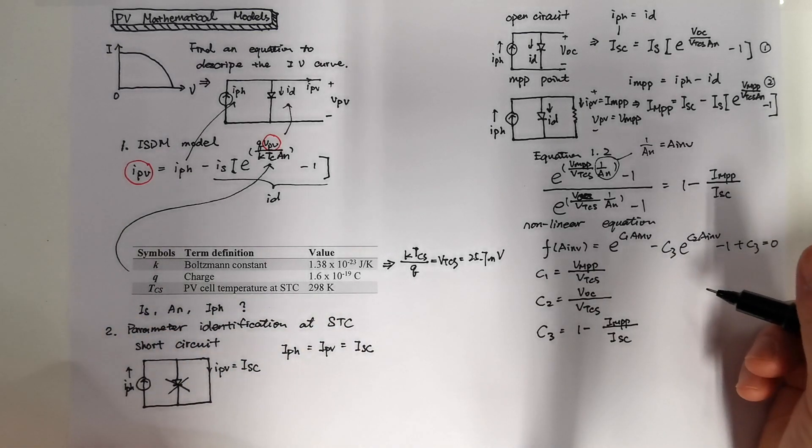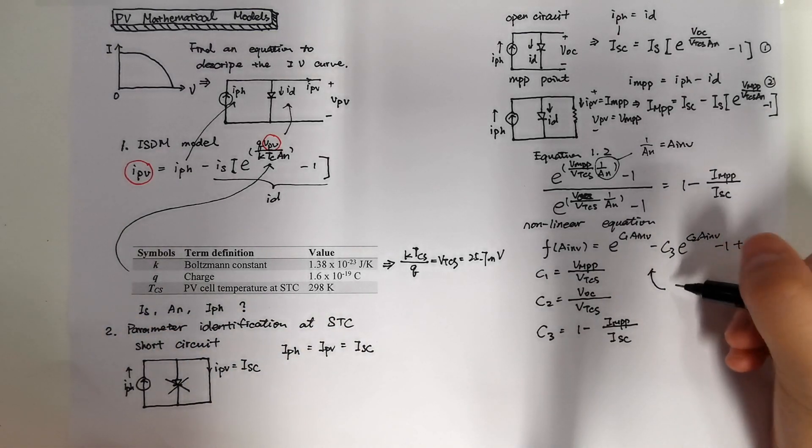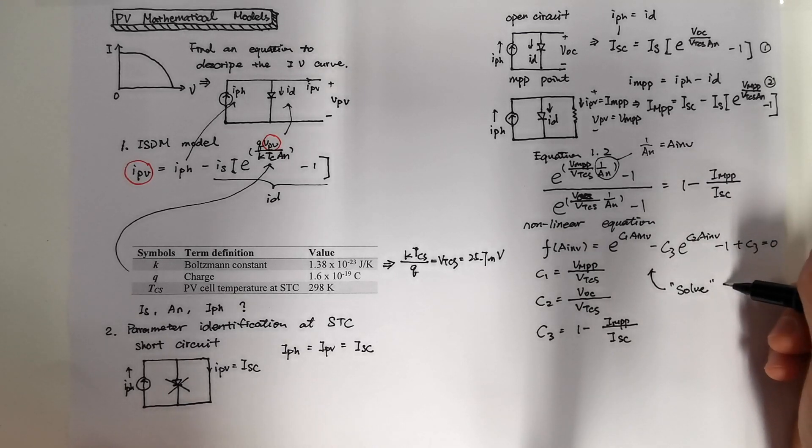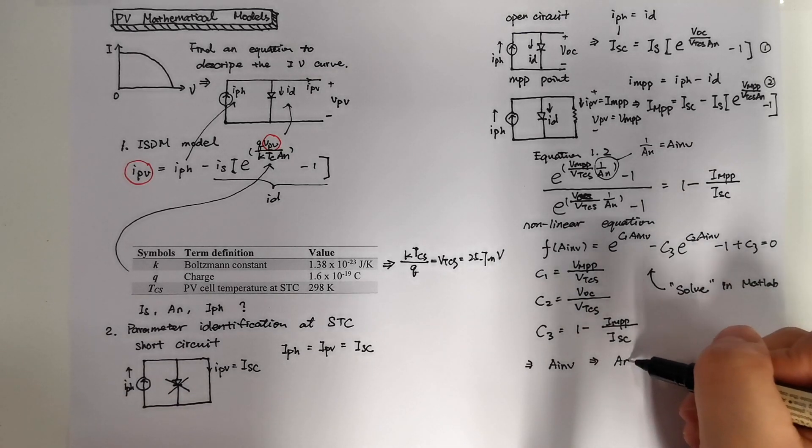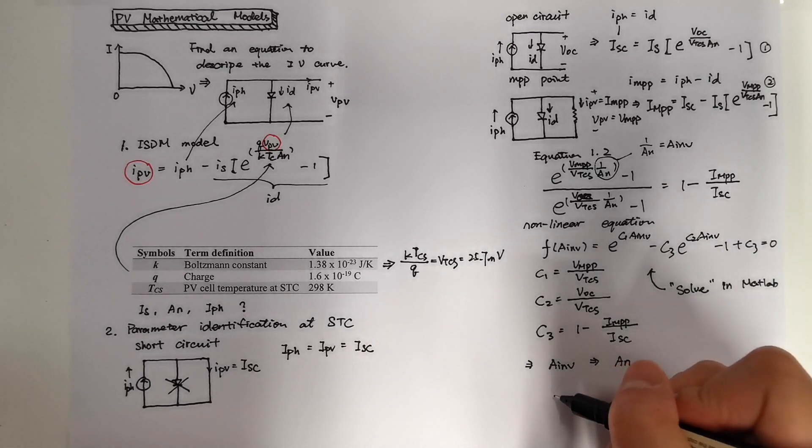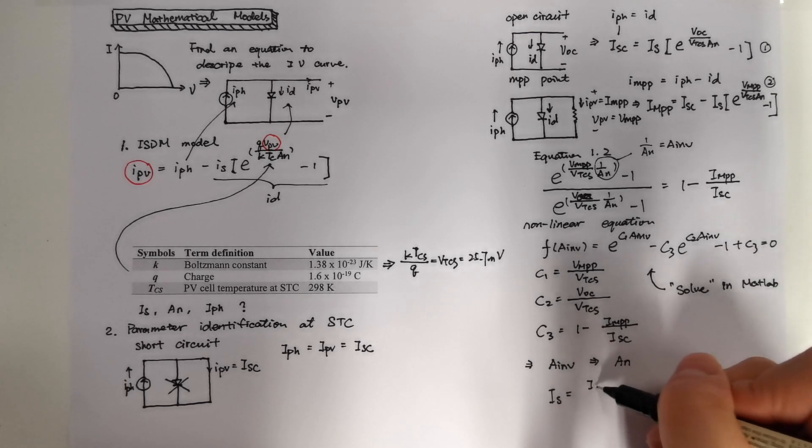The C1, C2, C3 value is listed here. You can use the solve function in MATLAB to solve this equation. And by solving this equation, we know the value of AN inverse. And by putting AN inverse into 1 over AN inverse, we can get our AN.